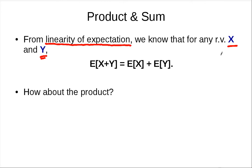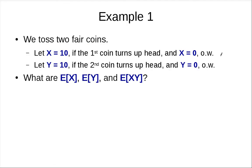Our question is about the product. Let's take a look at a few examples. In example one, we toss two fair coins. Let the first random variable X be 10 if the first coin turns up heads and 0 otherwise, and the second random variable Y be 10 if the second coin turns up heads. So we have two fair coins and we toss them independently.